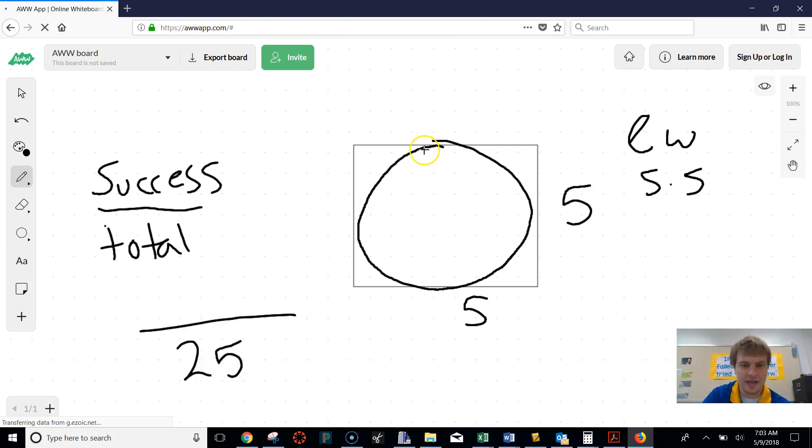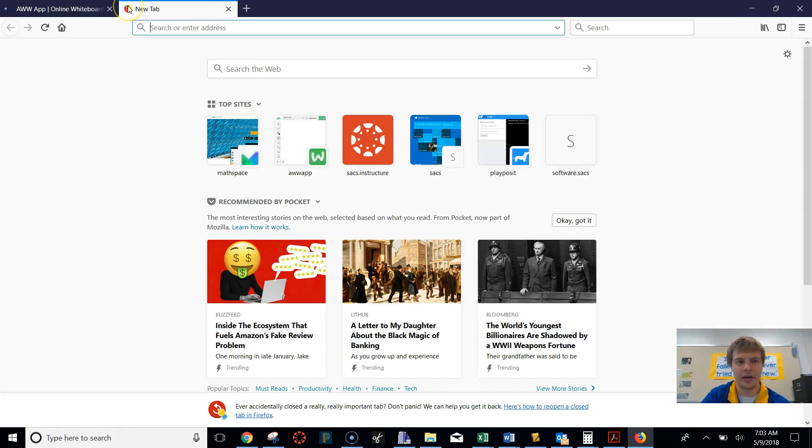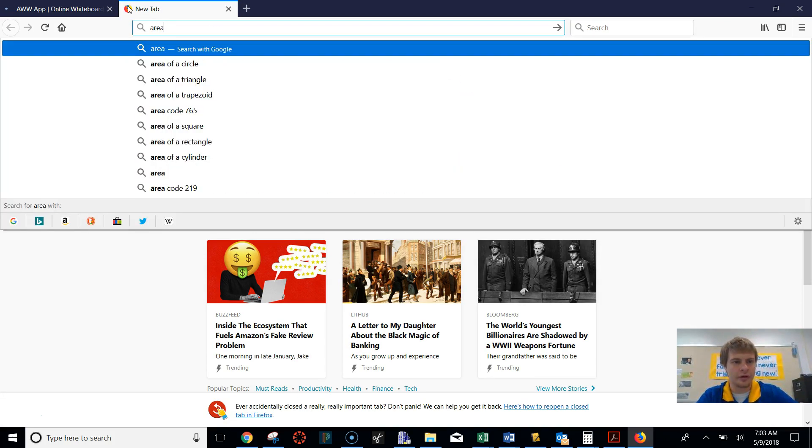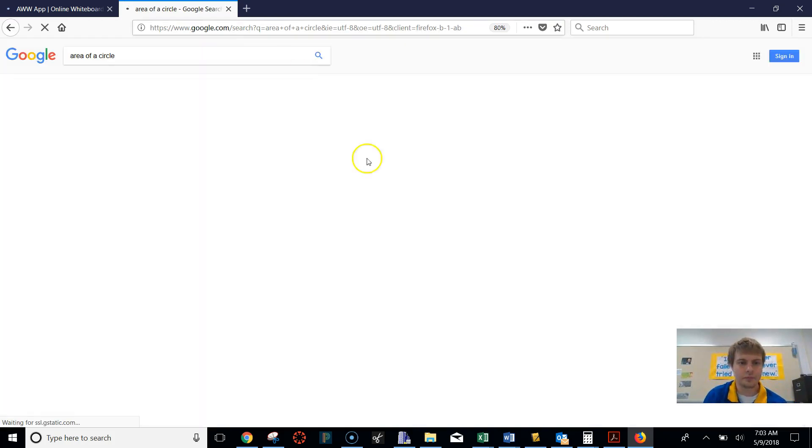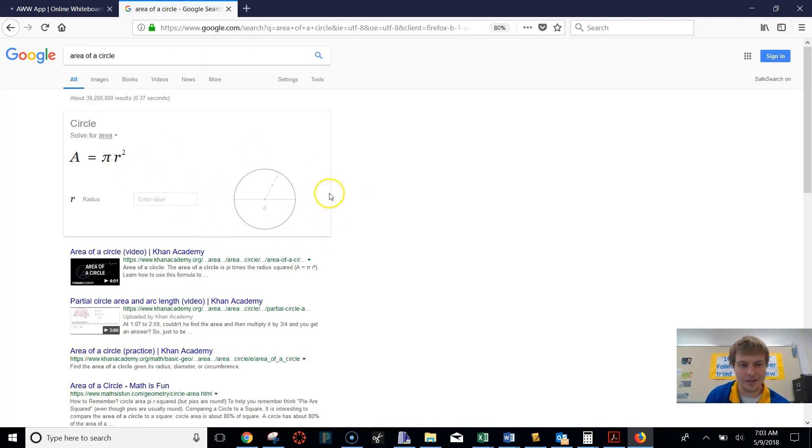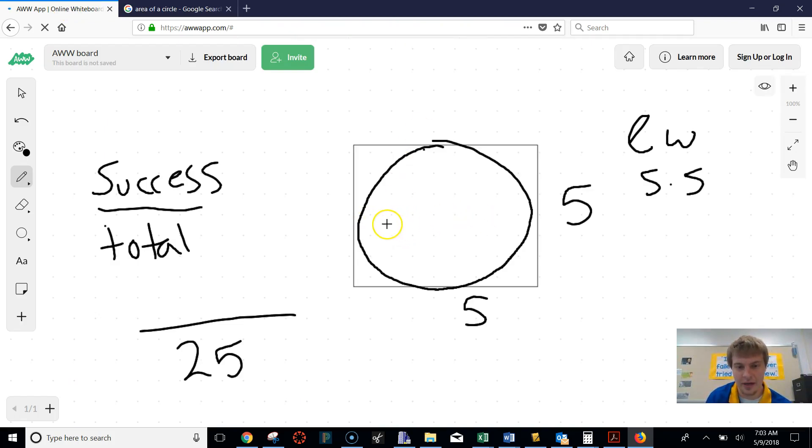And now we're going to find the area of this circle. And if you ever forget how to find the area of anything, just on Google, go, area of circle. And Google will actually have this nice little formula for you. And it will even tell you the area of these things, which is really nice. But for us, an area of a circle is pi r squared. Well, you might go, well, my circle doesn't have anything in there. But it does tell us how far this length is, which that length is the same as that bottom. So that length is 5. And our radius would be half of that. So half of 5 would be 2.5.